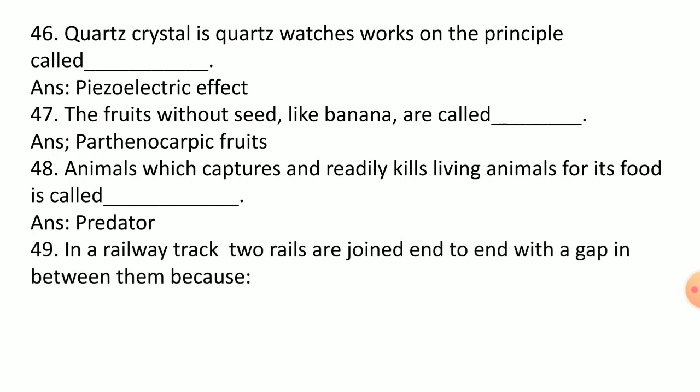In a railway track, two rails are joined end-to-end with a gap in between them because accidents due to expansion in summer can be averted.